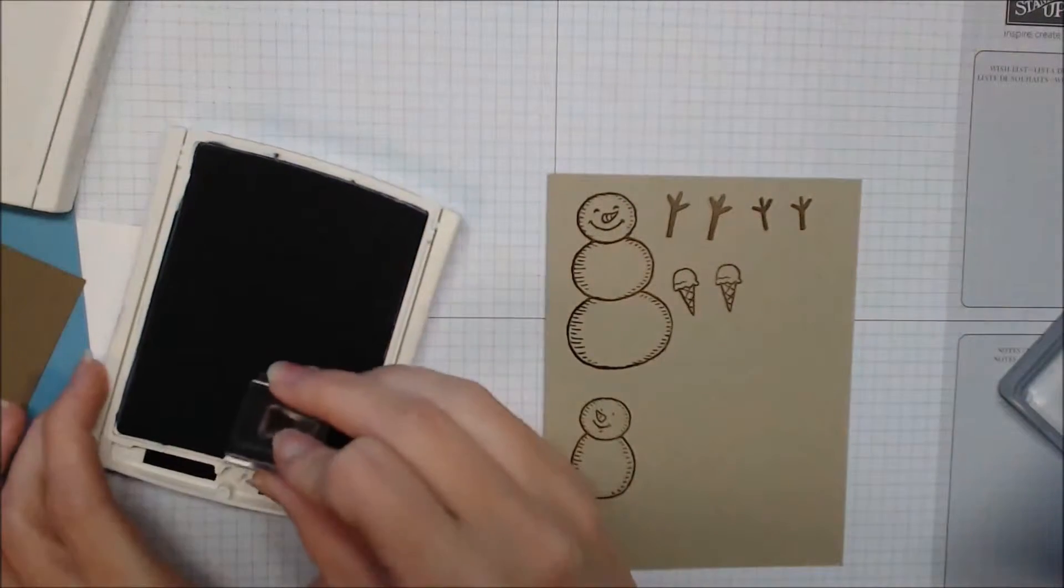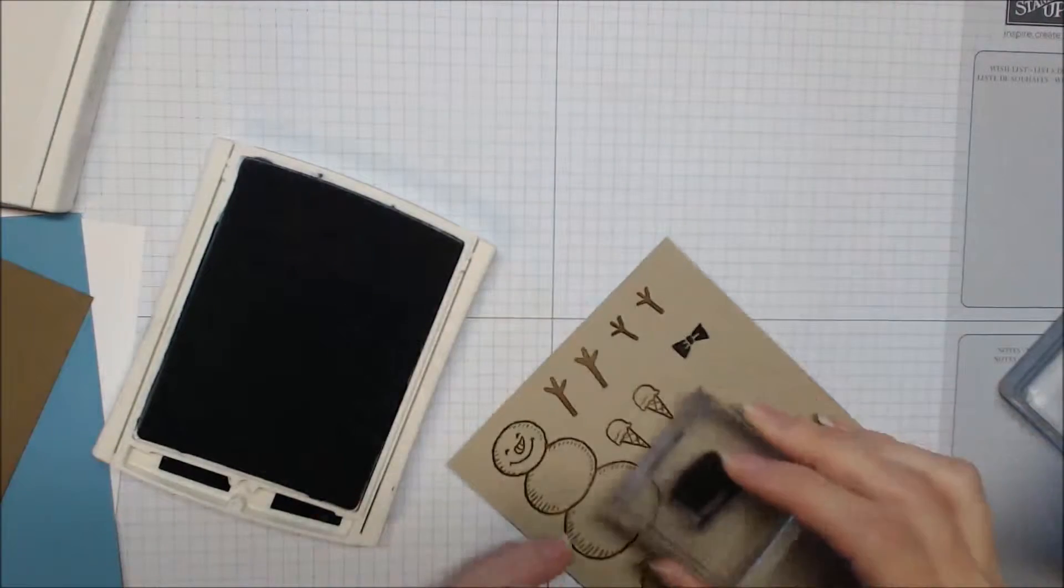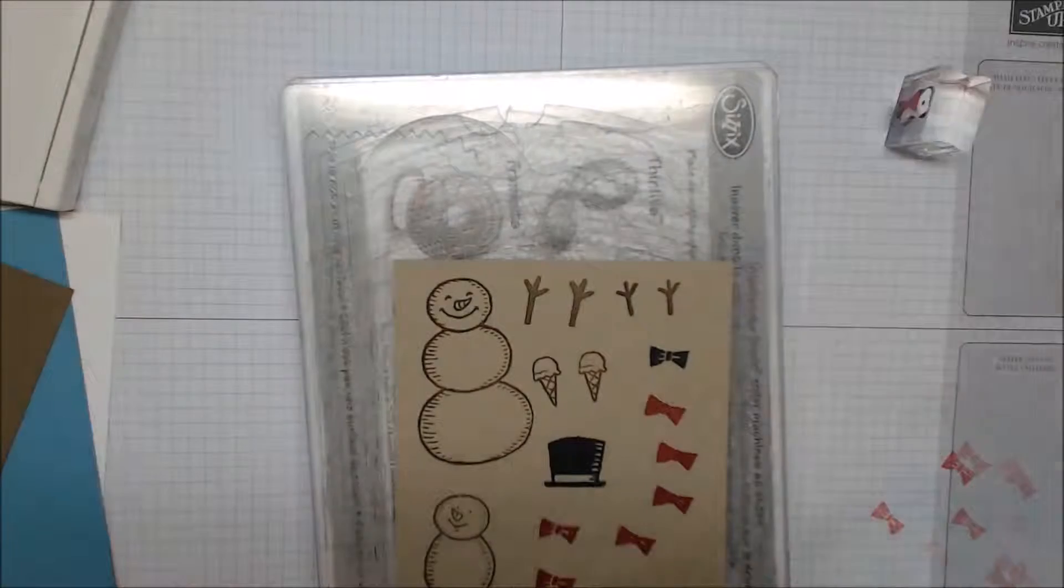So now using basic black archival ink, we will stamp the bow tie image as well as the top hat image.